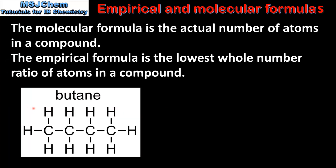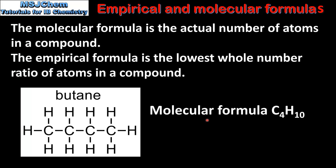Here we can see the structure of butane, which is an organic compound. One molecule of butane has 4 carbon atoms and 10 hydrogen atoms. So the molecular formula of butane is C4H10, because there are 4 carbon atoms and 10 hydrogen atoms in one molecule of butane.